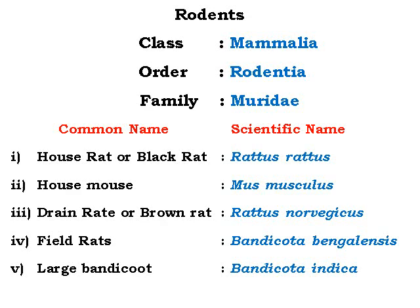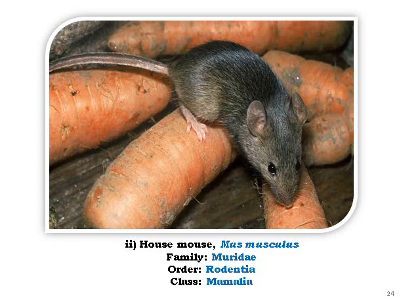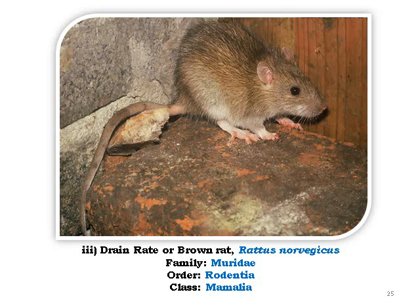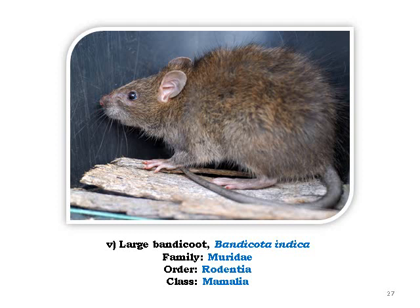There are several rat species observed in godowns: Rattus rattus, Rattus musculus, Rattus norvegicus, Bandicota bengalensis, and Bandicota indica — five species. The house rat or black rat is Rattus rattus. The house mouse is Mus musculus. The red or brown rat with a long tail is Rattus norvegicus. Bandicota bengalensis has very fluffy, broad hair, while Bandicota indica is the large bandicoot with circular ears.